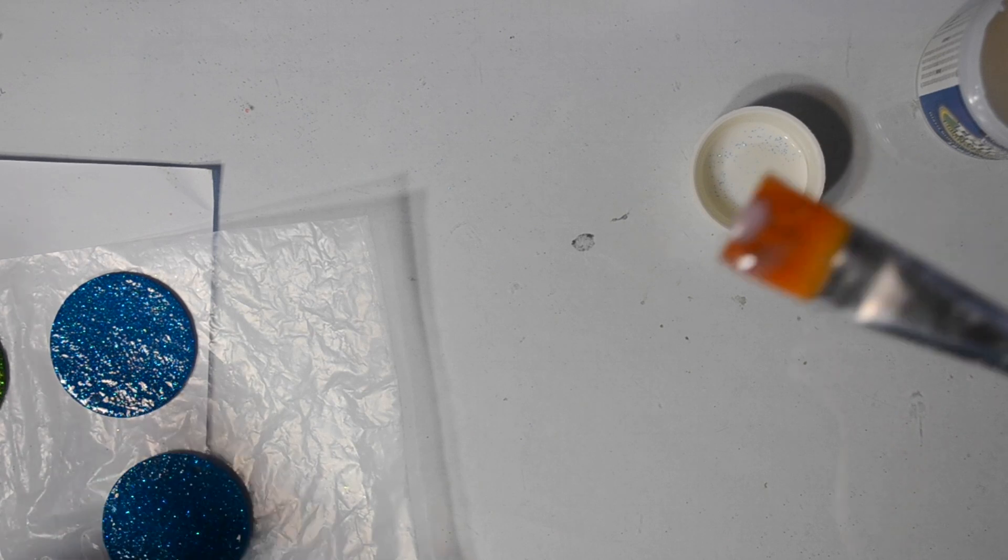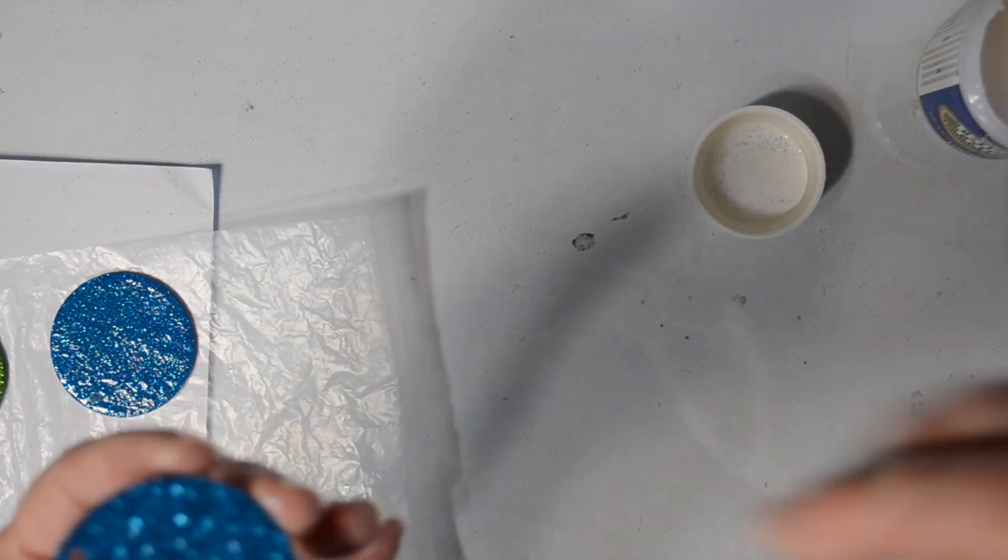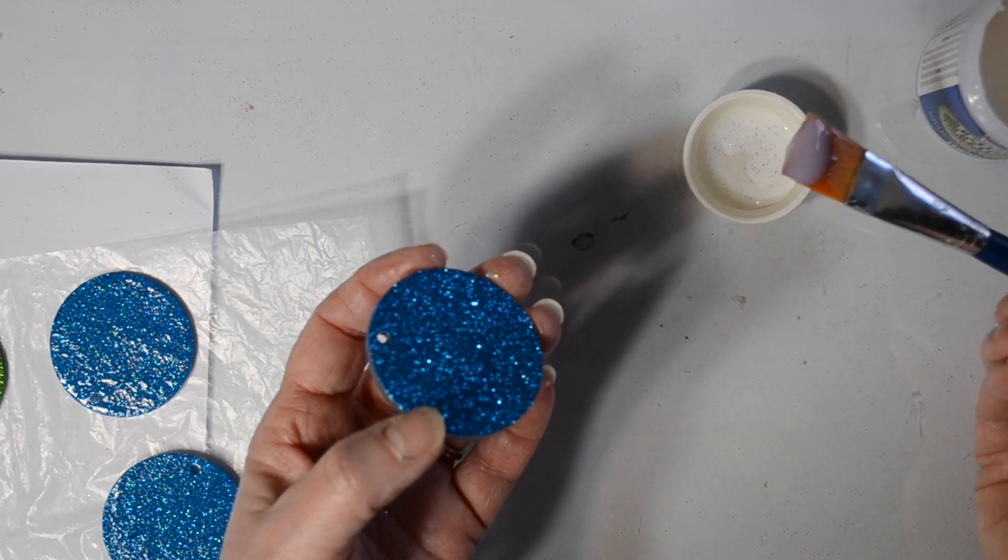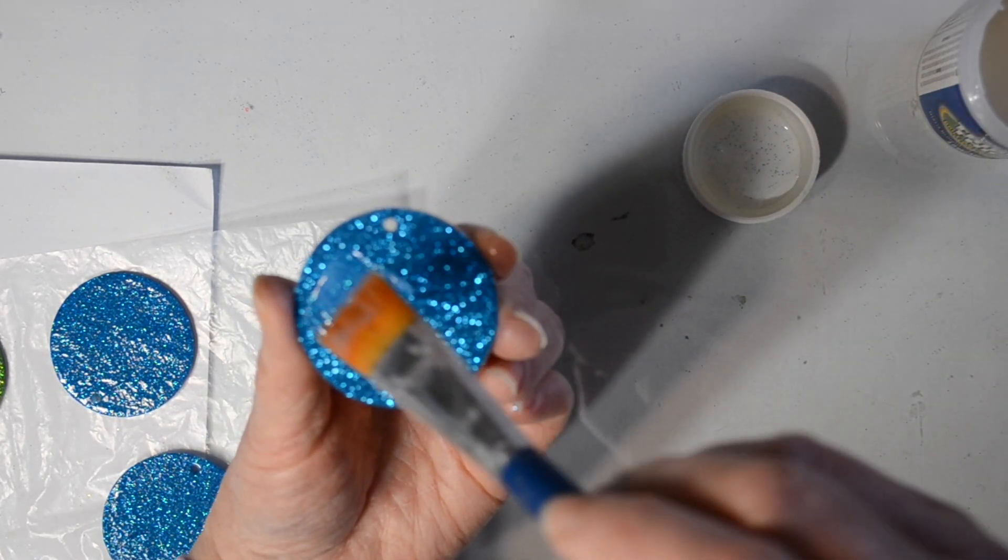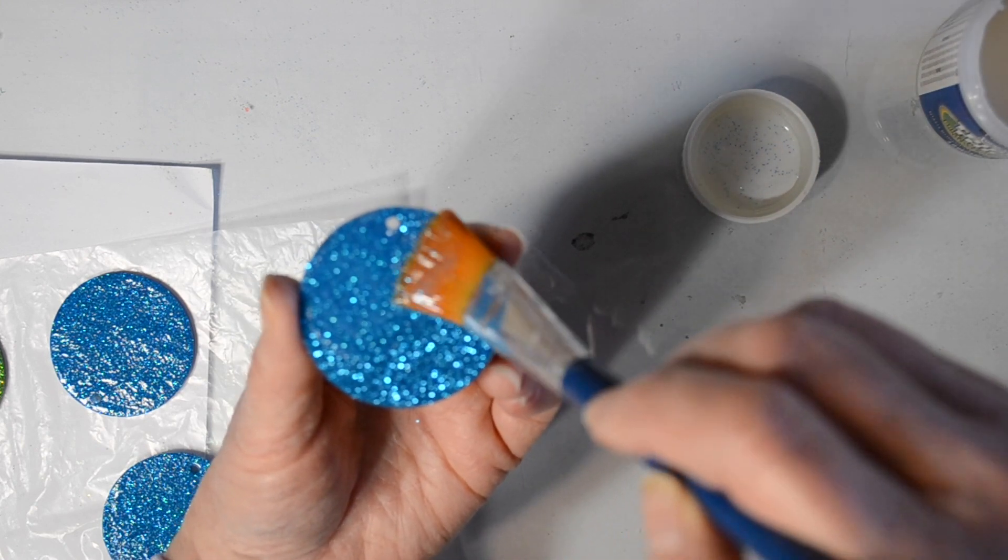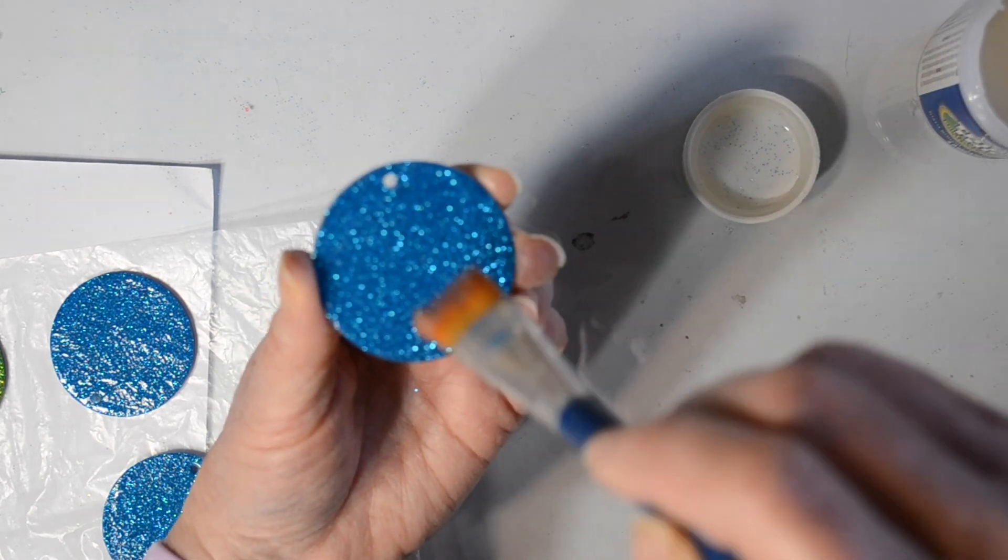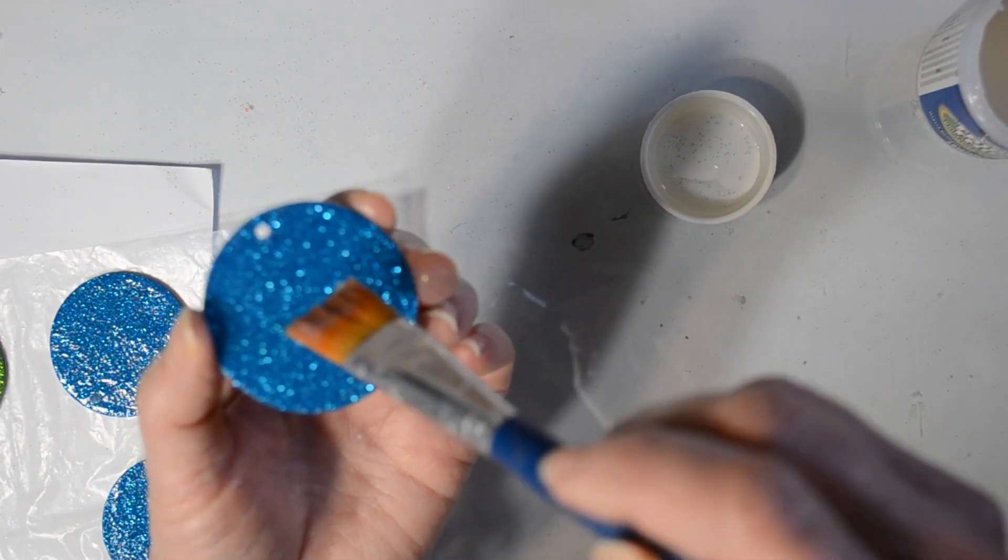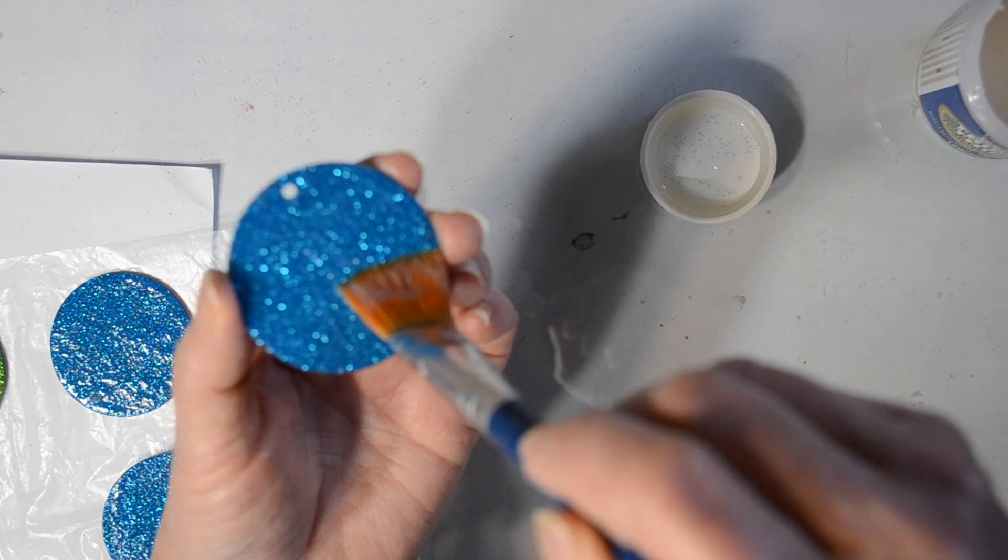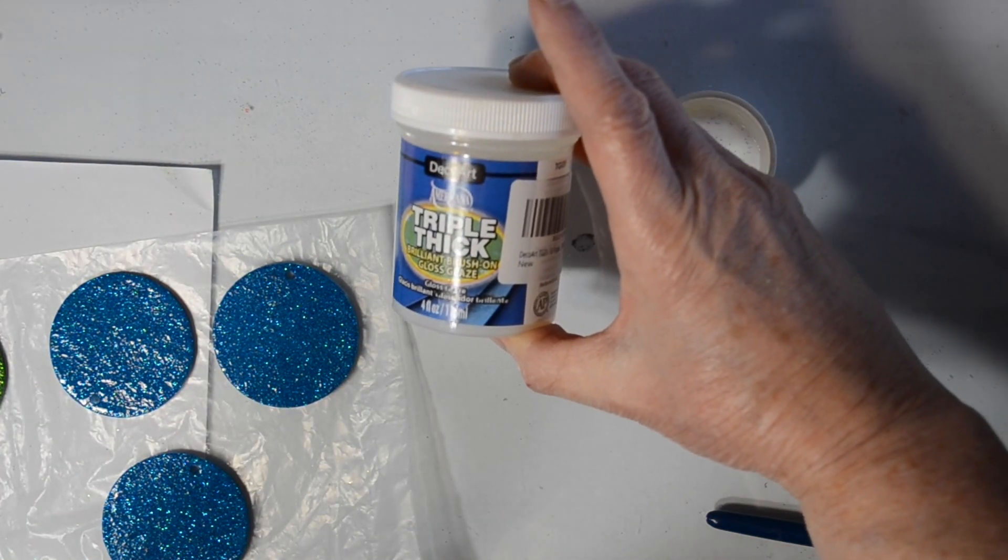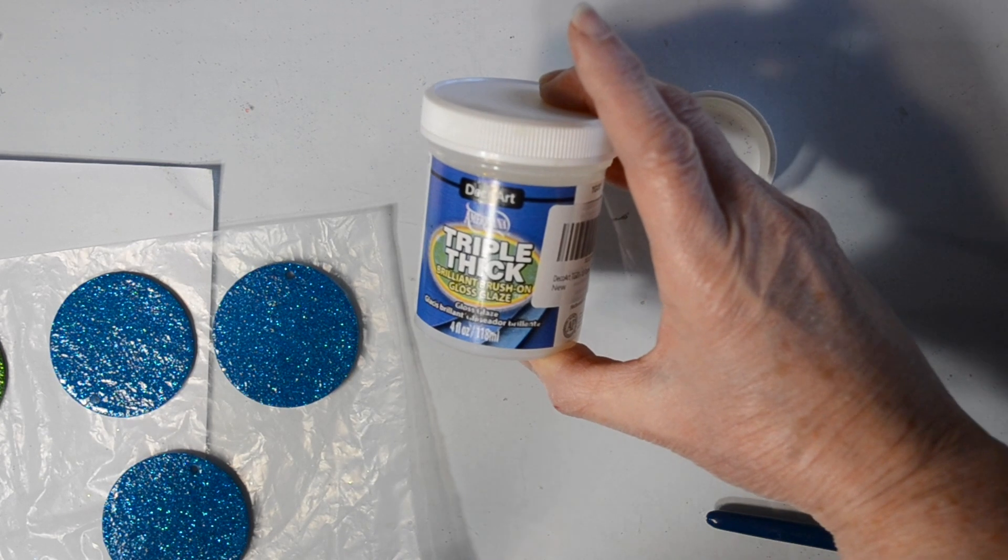I put it in a separate little lid. So I'm going to go ahead and just put another coat of this over the back and that's going to seal in any of that glitter. So no more glitter is going to come off after this point. It also gives it a really fun high gloss appearance as well as sealing everything in.